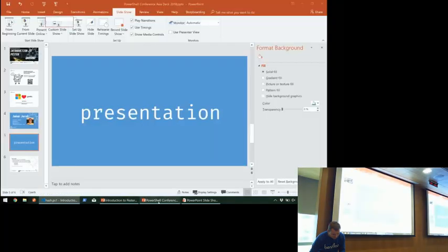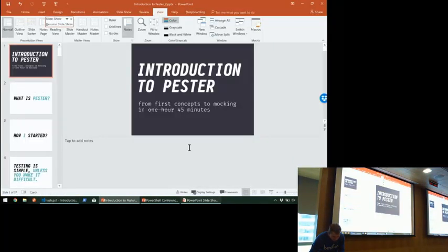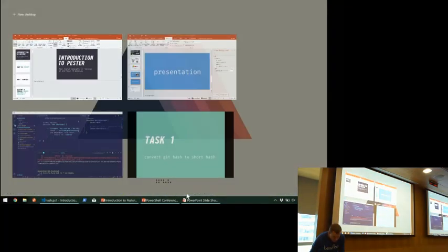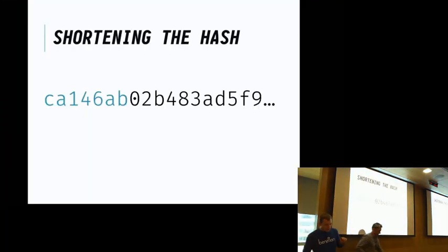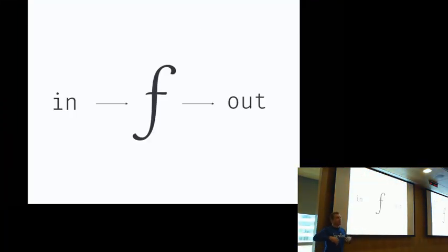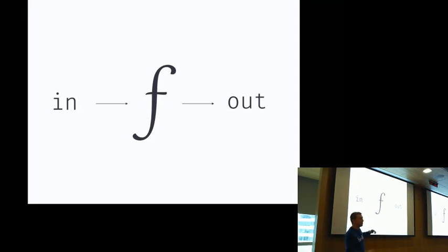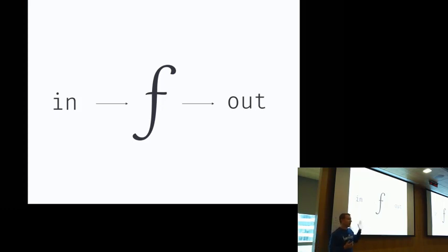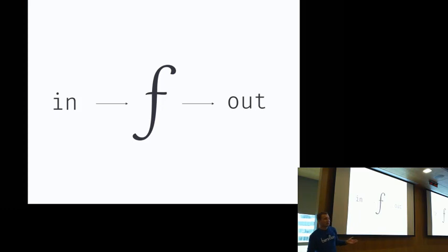This is how we shorten the hash. If you look at this function, this is the scheme you could use: you have a function in the middle, you give it some input, and you take some output. No side effects, nothing else happening. This is the easiest shape of function to test because it's pure. You just give it input, give it the expected output, and if that matches, your function is hopefully correct.